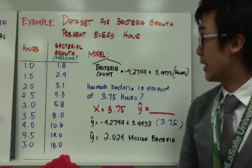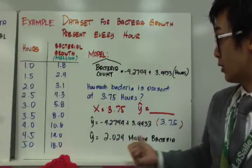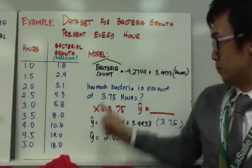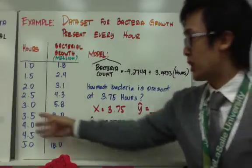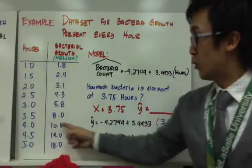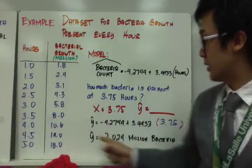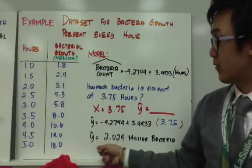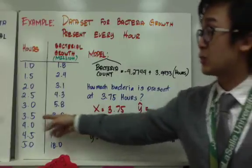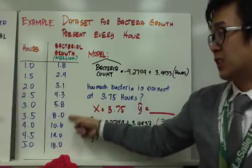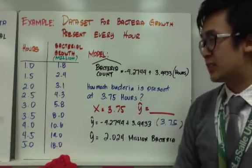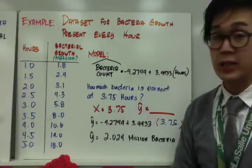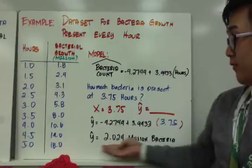However, if we observe our dataset, at 3.75 hours — which is between 3.5 and 4.0 hours — we notice that the bacterial growth is not matching our y-hat. The y-hat gives us 2.024 million, whereas we know that between 3.5 and 4.0 hours the bacteria should be around 9 million. I'm going to show you a visual representation of what is happening to our linear model and how we can explain this discrepancy.